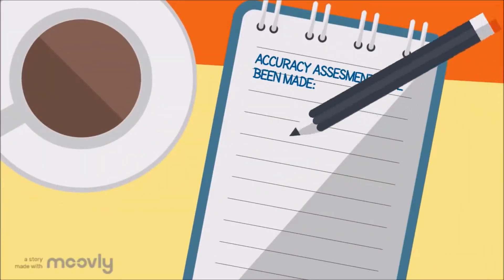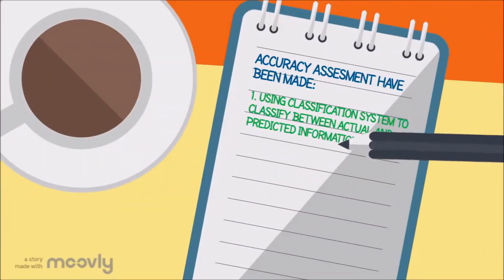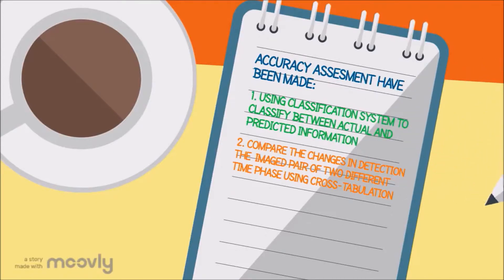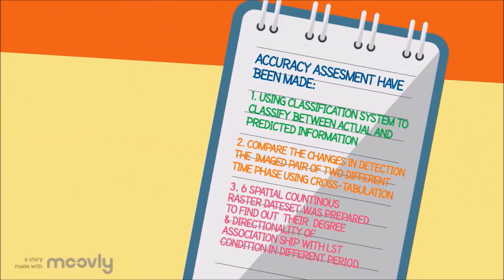In this journal, an accuracy assessment was made. First, by using a classification system to differentiate between actual and predicted information. Second, comparing the changes in detection using image pairs of two different time phases via cross-tabulation. Lastly, a spatial partial continuous raster dataset was prepared to determine the degree and directionality of association with land surface temperature conditions in different periods.